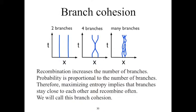There is a branch which goes from left to left, a branch from left to right, from right to left, and from right to right. In the diagram on the right, there are many recombinations and many branches. Increasing the number of branches increases the probability, which increases the entropy. There is therefore a tendency for the branches to stay close to each other, and we will call this branch cohesion.